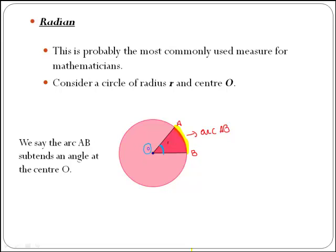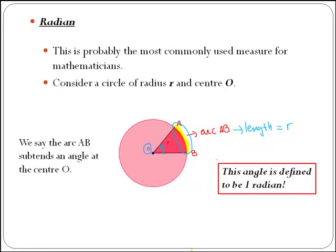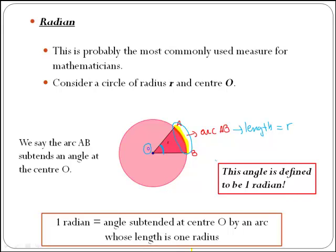In the case where the arc length is exactly the same as the length of the radius, we are actually defining what a radian is. One radian is the angle subtended at center O by an arc whose length is precisely one radius.